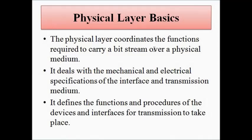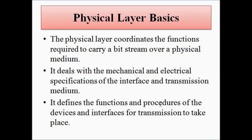The physical layer deals with transmission over the physical medium, whether wired or wireless. The data which is transferred is in digital form — that is, in bit form, a series of zeros and ones. So the physical layer coordinates the function to carry the required bit stream over the physical medium. It deals with the mechanical and electrical characteristics of wired media such as coaxial cables, twisted pair cables, optical fibers, or the electromagnetic medium, air.